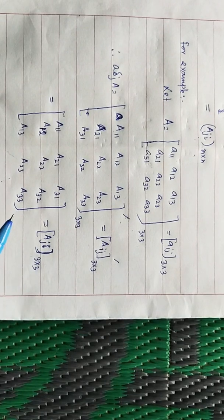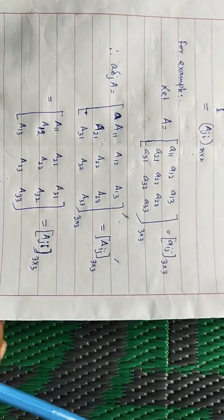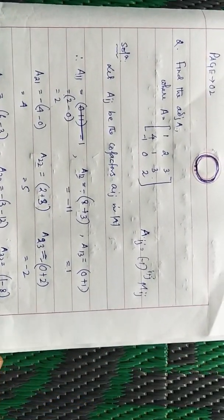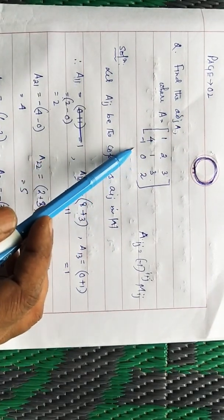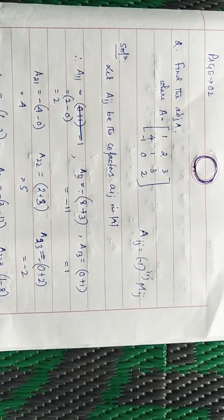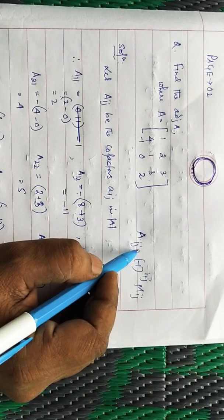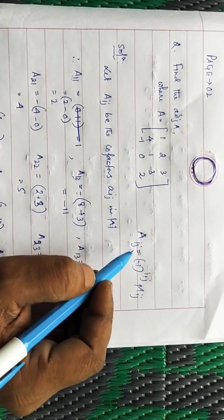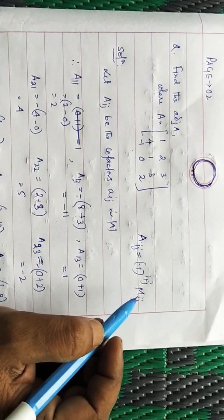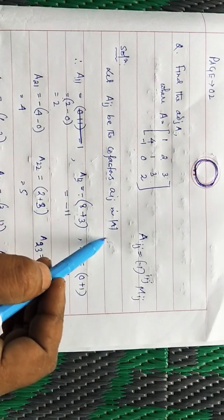Now let us solve a question so it becomes very easy to understand. Suppose you have to find the adjoint of matrix A whose entries are: first row [1, 2, 3], second row [4, 1, 3], third row [−1, 0, 2]. To find the cofactor of a particular element, use the formula: capital A_ij = (−1)^(i+j) × M_ij, where M_ij is called the minor of that element. First, write the statement: let capital A_ij be the cofactor of small a_ij in the determinant of A.